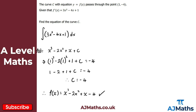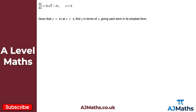That's the solution to the first question. Now let's take a look at one more. The questions don't really change too much — the only way it changes is they might use dy by dx instead of f prime of x, and give y in terms of x. Here we have dy by dx equal to 5x root x minus 2x, and we're given that y equals 43 at x equals 4. We want to find y in terms of x, so again we start by integrating dy by dx.